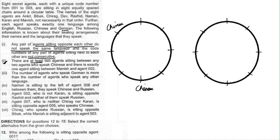The third condition says: the number of agents who speak German is more than the number of agents who speak any other language. This is a general statement we'll use at a later point.